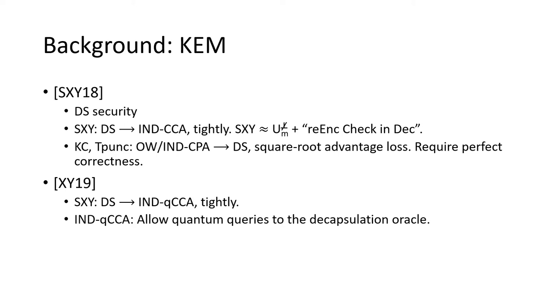They also gave two transformations named KC and T-punk that can turn one-way or CPA-secure PKE into DS-secure PKE. However, they all suffer from the square root advantage loss. Besides, they require the underlying PKE to be perfectly correct.